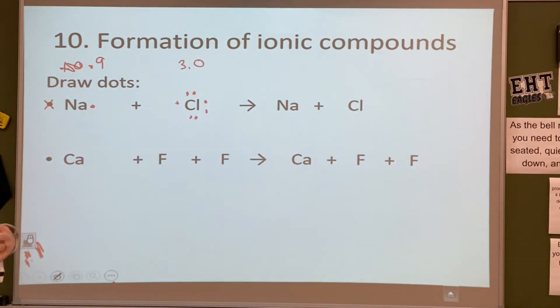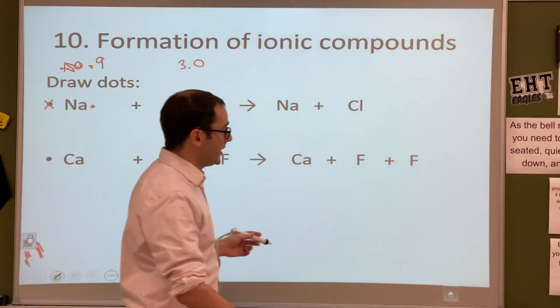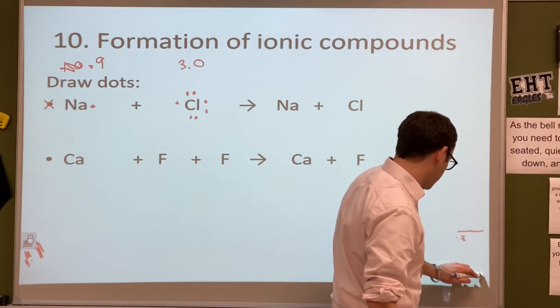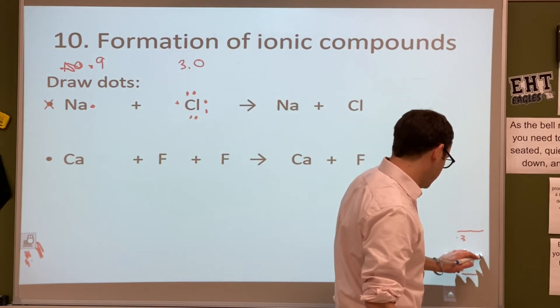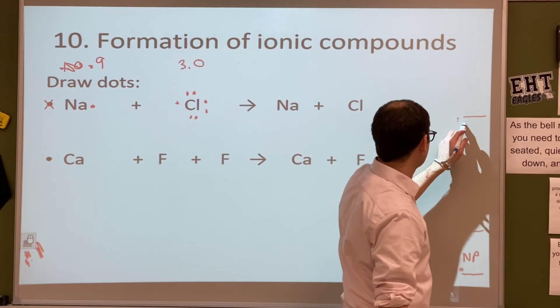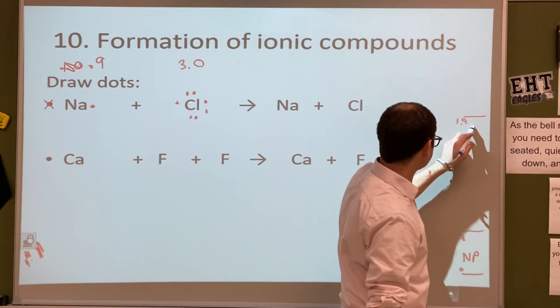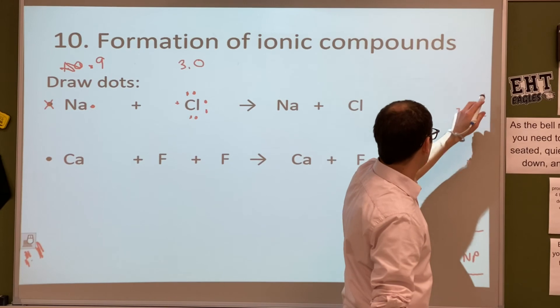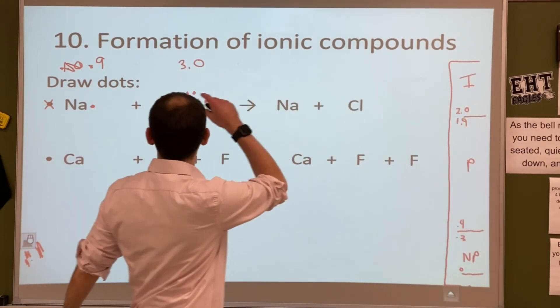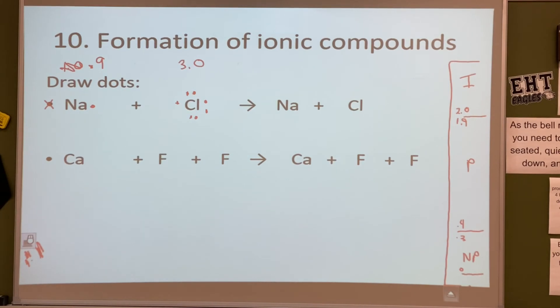Okay, so when we find the difference of these two, what do we get? 2.1. Yeah, and if you remember that little chart that we have, anything from 0 to 0.3 is nonpolar, 0.4 up to 1.9, that's going to be our polar, and then 2 and above is going to be ionic. Alright, so we're above 2, so that means it's going to be ionic.